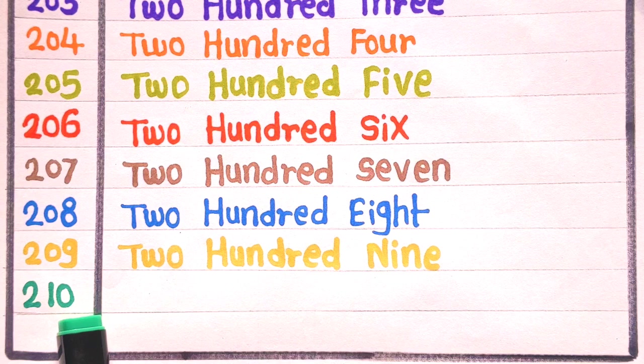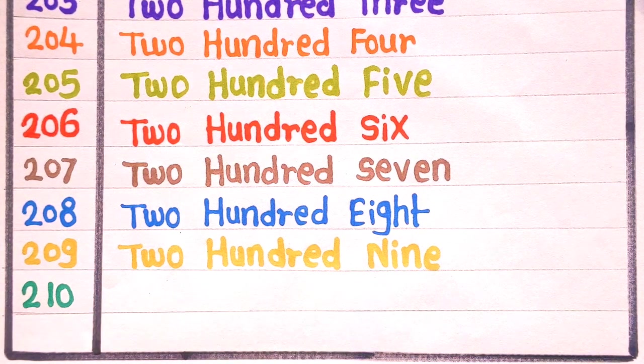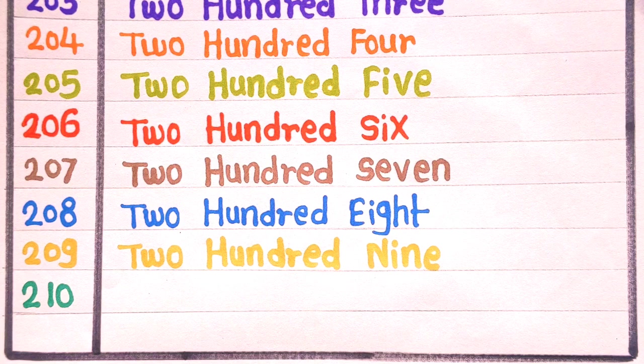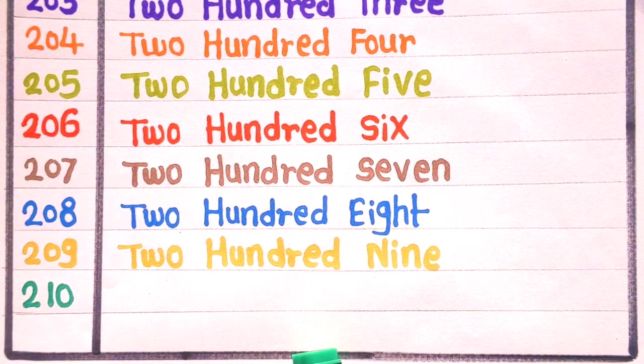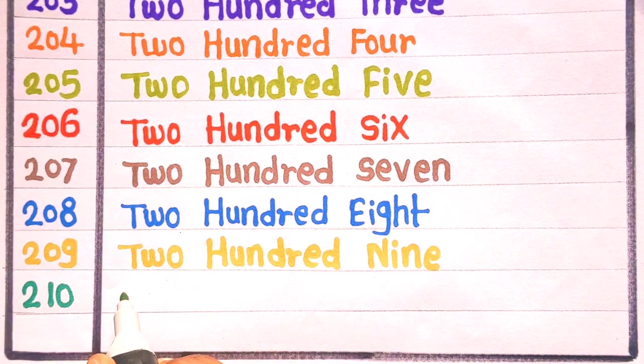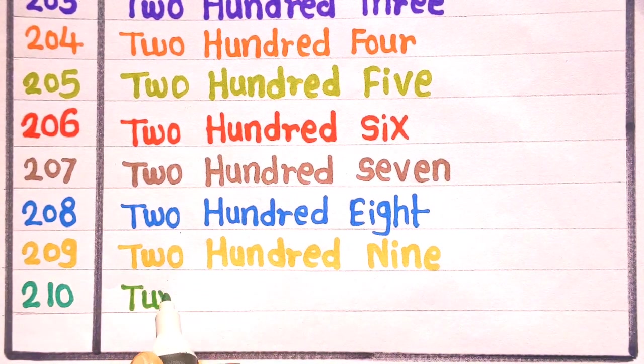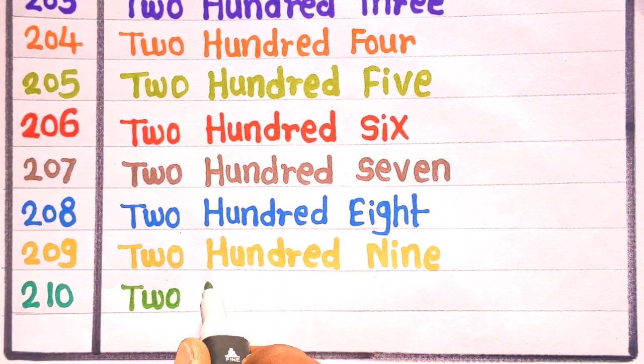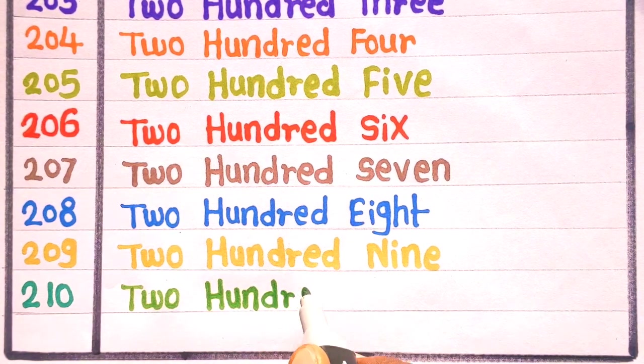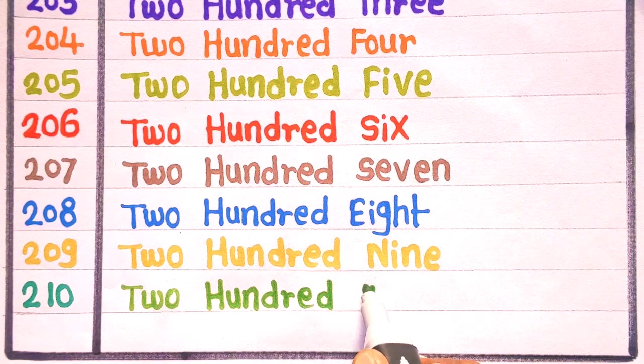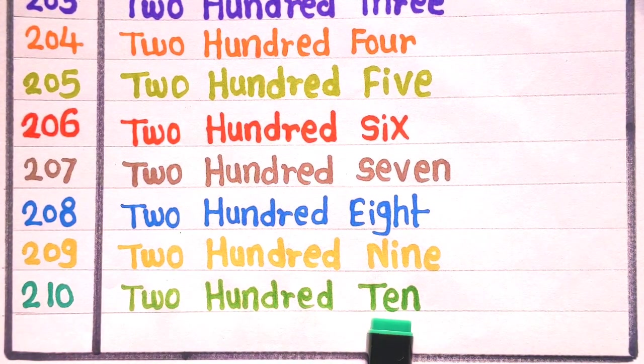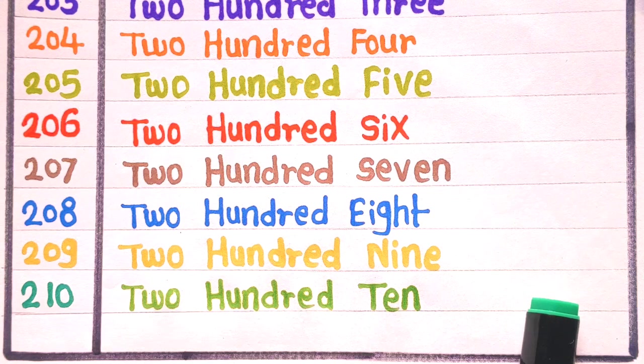And 210 is 210. T, W, O, 2, H, U, N, D, R, E, D, 100, T, E, N, 10, 210. With the dark green color.